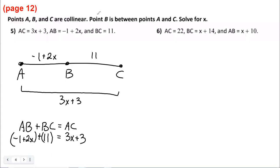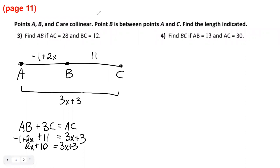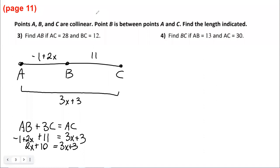Simplifying the left side: 2x stays, and 11 minus 1 gives positive 10, so we have 2x plus 10 equals 3x plus 3. We have x on both sides, so we move the smaller x — subtract 2x from both sides — giving 10 equals x plus 3. Then subtract 3 from both sides to get x equals 7.